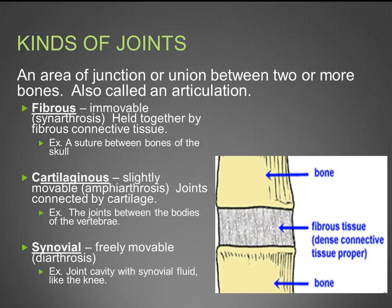There are three different types of joints: fibrous, cartilaginous, and synovial. A fibrous joint is immovable, also known as synarthrosis — it is held together by fibrous connective tissue. For example, the suture between bones of the skull.